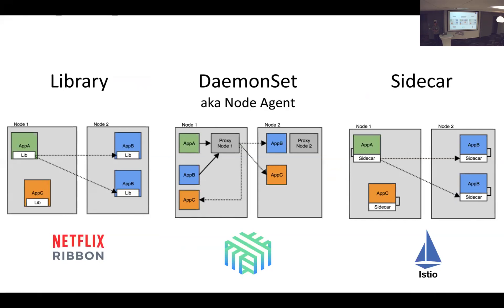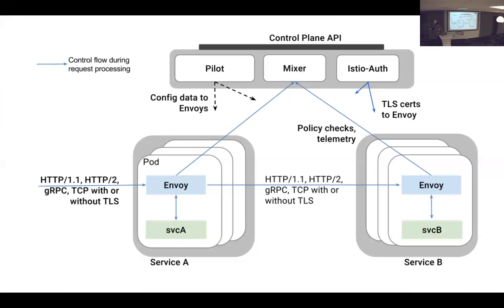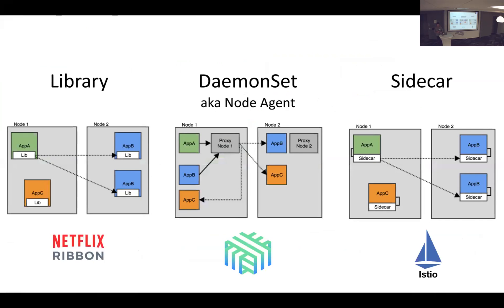One thing that is cool about service mesh and some of the popularity around the Istio model is around policy that you declare declaratively in Kubernetes. You could use Istio and Envoy sidecars to implement the policy. The Buoyant guys who made Linkerd are also working on another service mesh product called Conduit that's more of the sidecar model and has a different data plane written in Rust.